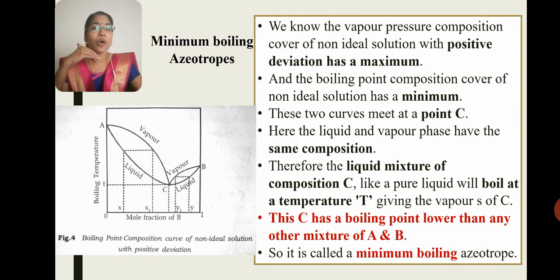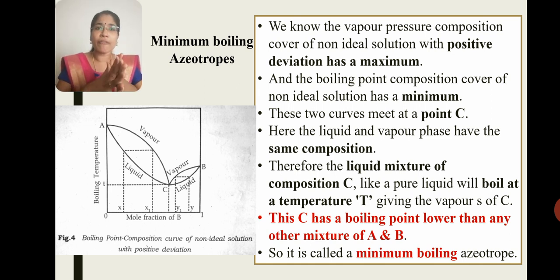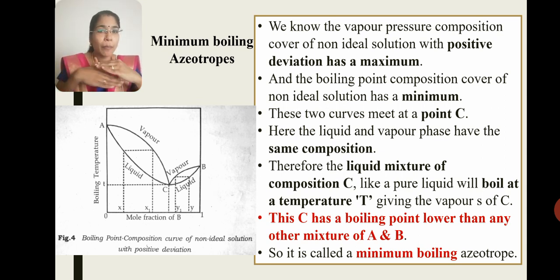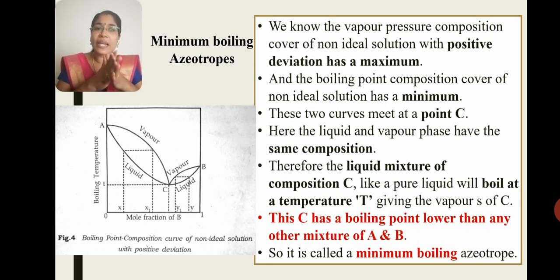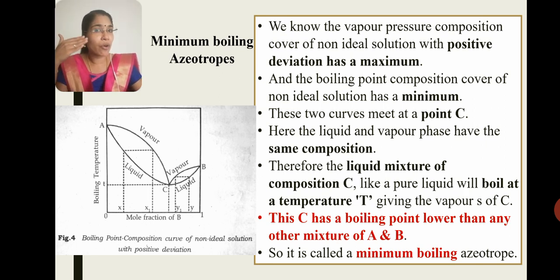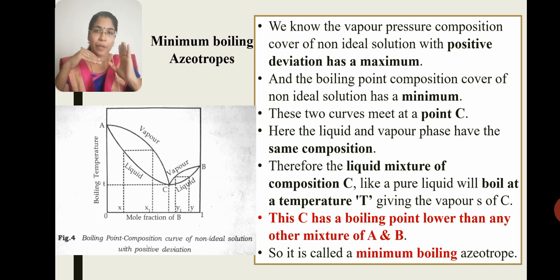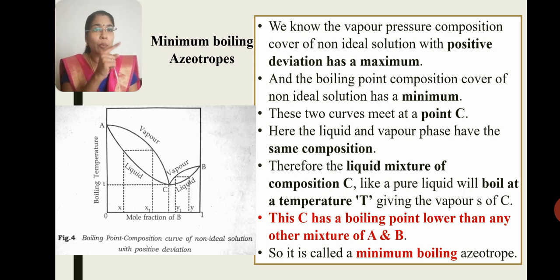In the minimum boiling azeotrope, we will study a graph of boiling temperature against mole fraction. We will study positive deviation — the vapor pressure composition curve of a non-ideal solution with positive deviation has one maximum value, while the boiling point composition curve of a non-ideal solution has a minimum.